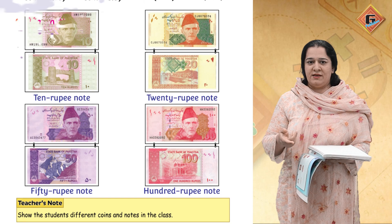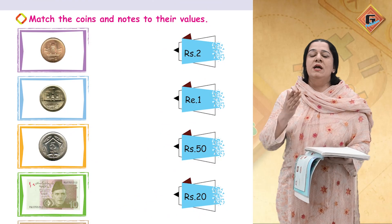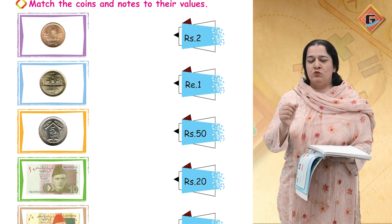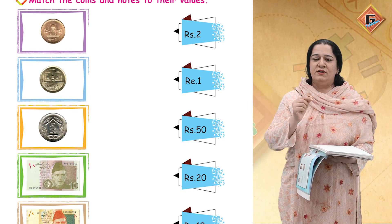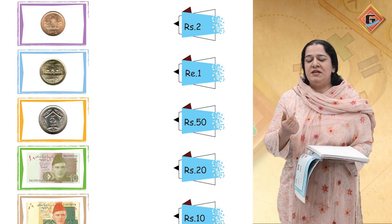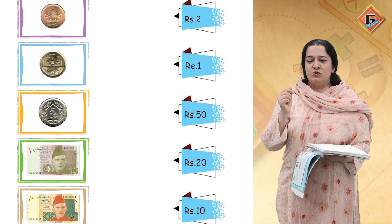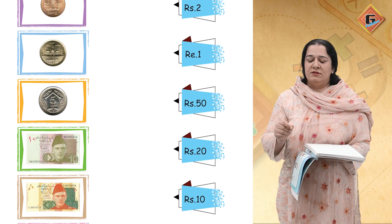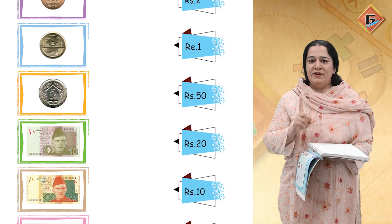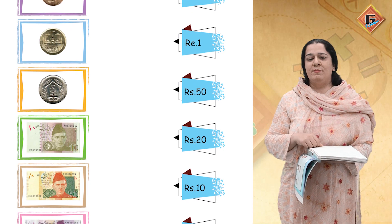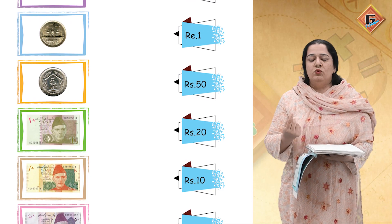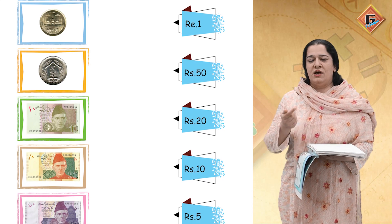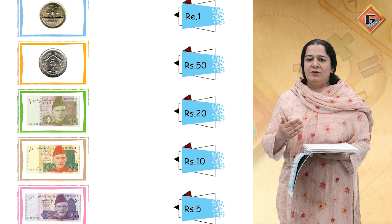For example, if you have two notes of hundred, then it is 'two hundred rupees.' Otherwise, use 'rupee.' When writing in abbreviation form — for hundred, two hundred, five hundred, ten, or twenty — write 'Rs' with capital R and small s. But when talking about one rupee coin, write 'Re' with capital R.